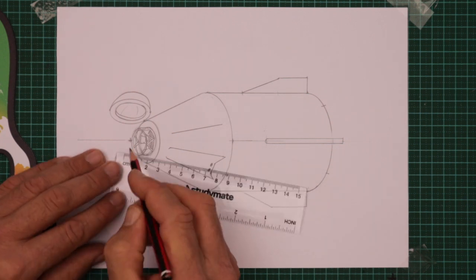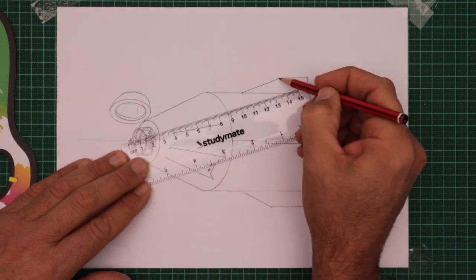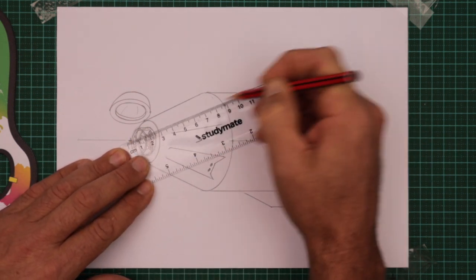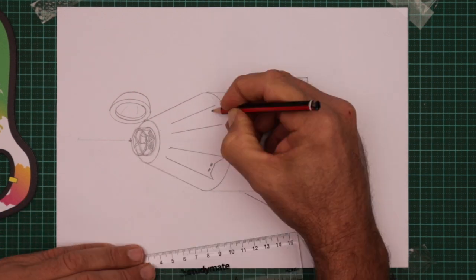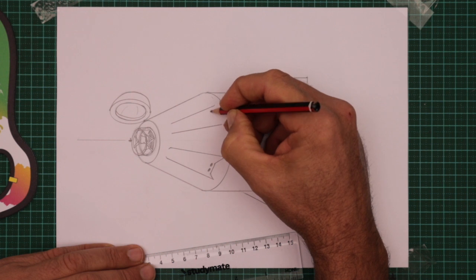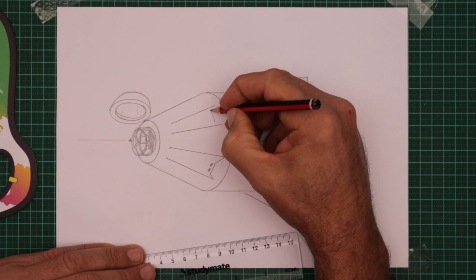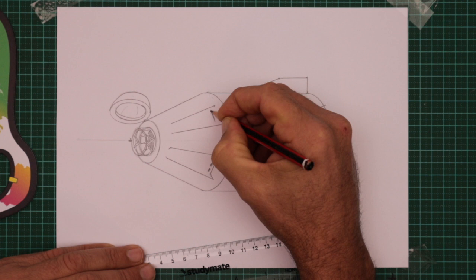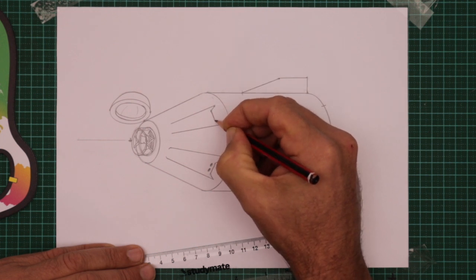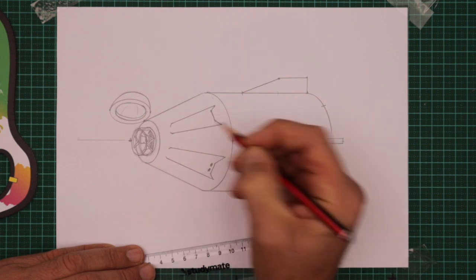We'll line the ruler up again with the mark. But this time we'll aim towards that point on the fin. And we'll draw a second line. Really lightly sketch in this line. When you darken it leave a small gap at the top there and a much larger gap at the bottom. Then join those two points. At the front you can round that off just a little.